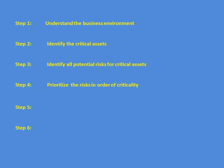Not all risks are equally important, as their impact may vary, so the fourth step is to prioritize the risks in order of criticality. Fifth, for each risk there can be multiple control mechanisms, but the cost of control should always be less than the cost of the risk, so we evaluate all available control mechanisms. Finally, the sixth step is to apply the relevant control.